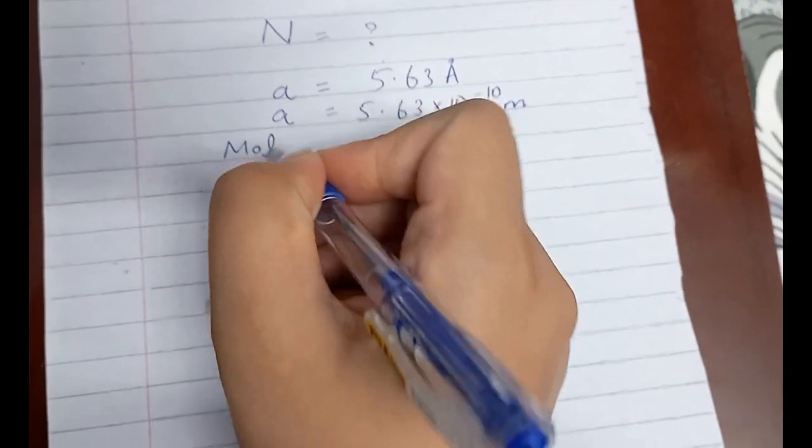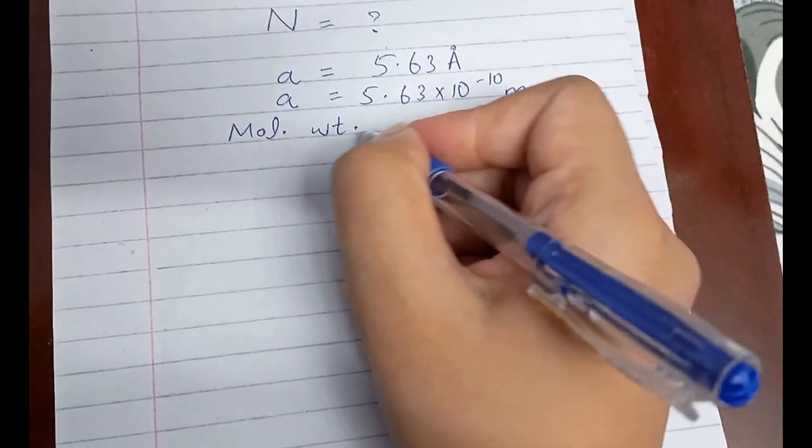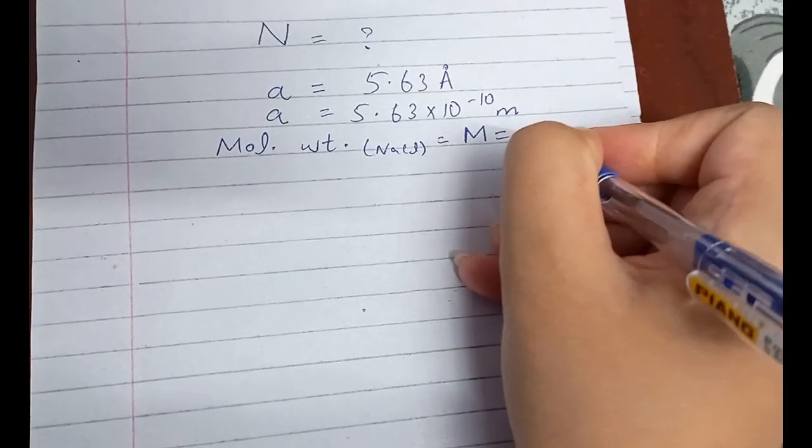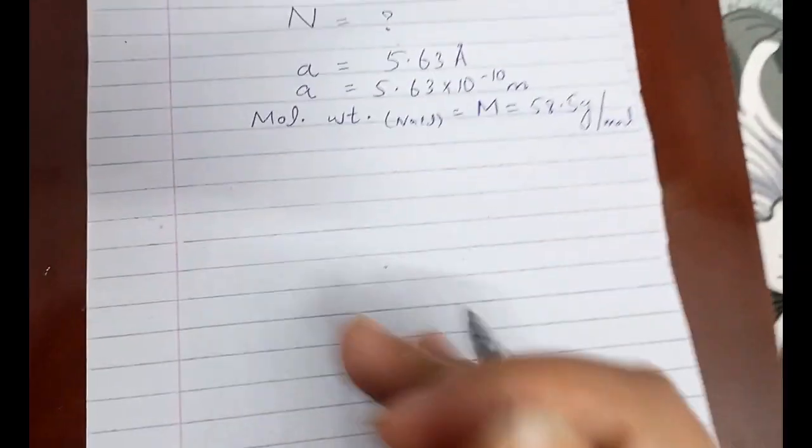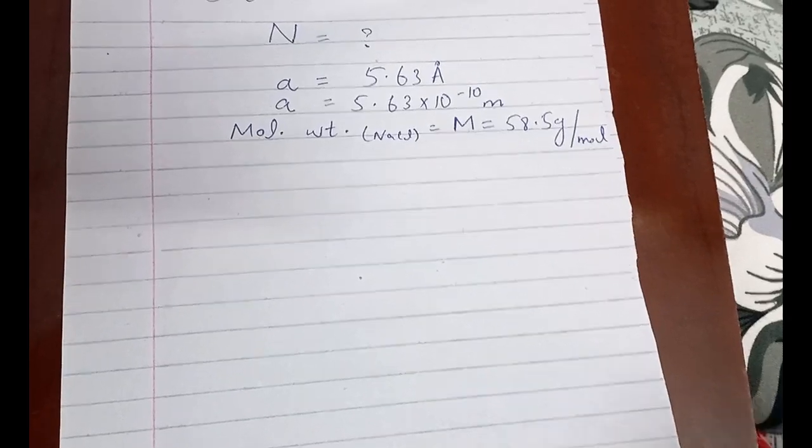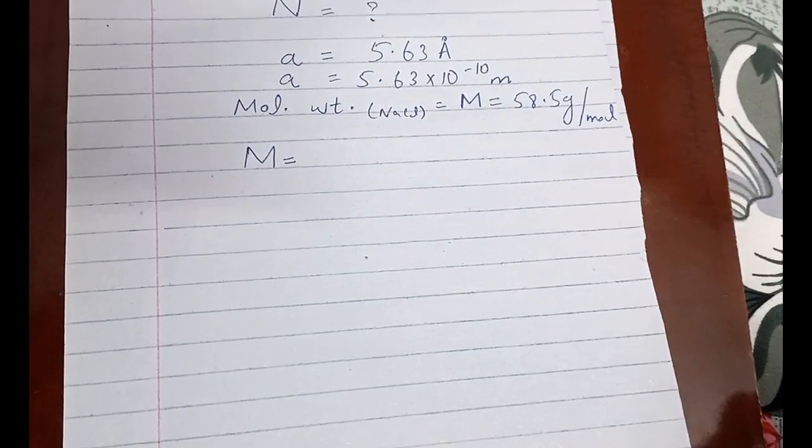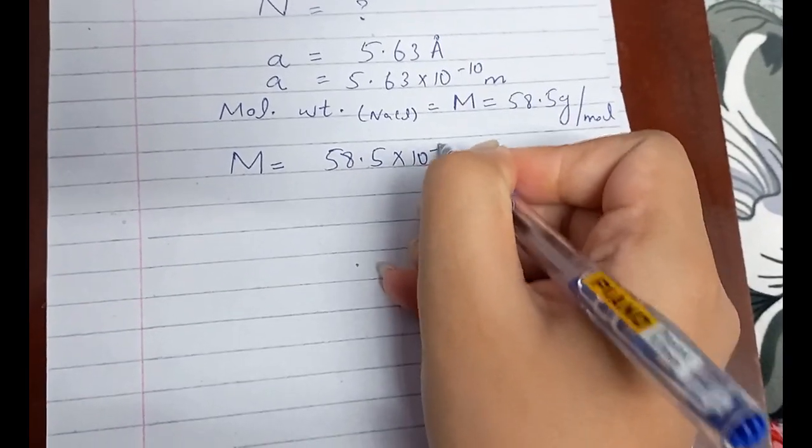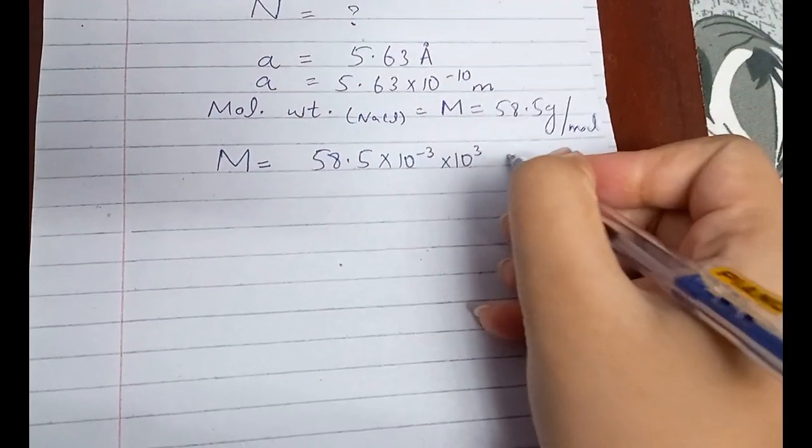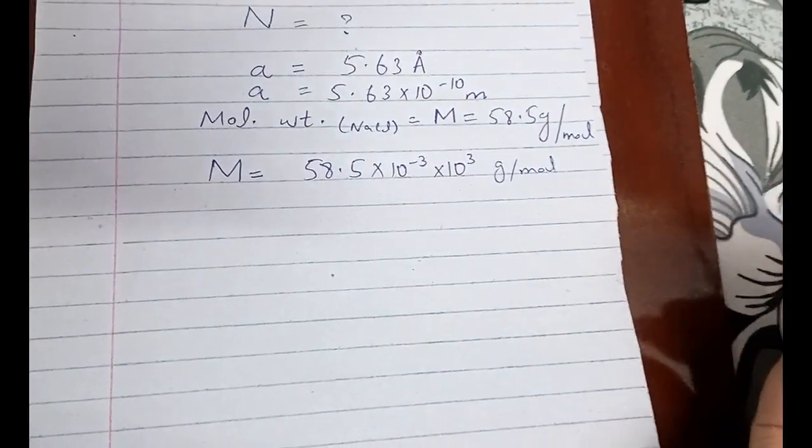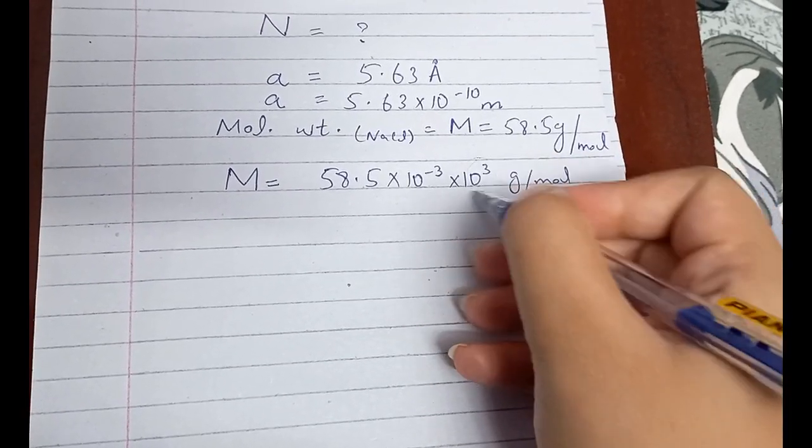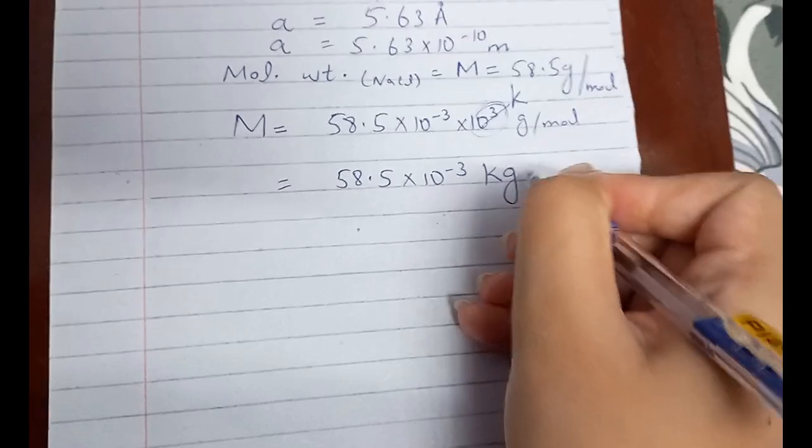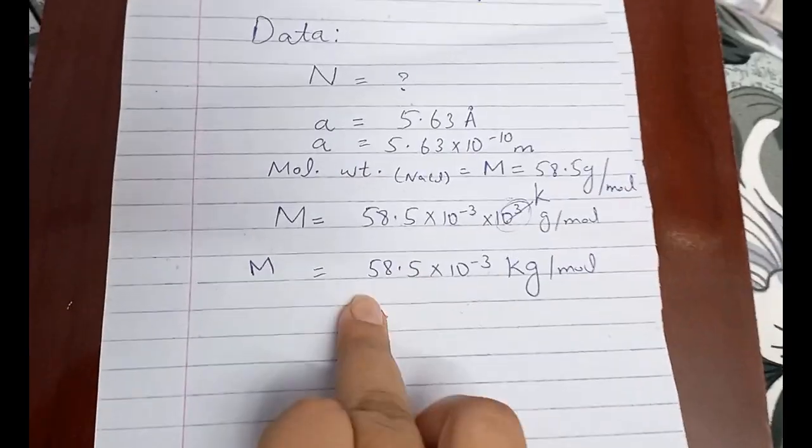Molecular weight of NaCl, which is represented by capital M, equals 58.5 gram per mole. We have to convert it into kg before inserting it into the formula because we all know the rule that all quantities should be in SI units before inserting into a standard formula. So 58.5 times 10 to the power minus 3 times 10 to the power plus 3, so gram per mole remains the same. We know that kilo equals 10 to the power positive three, so this will be converted into kg while all other quantities remain as they are.